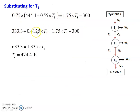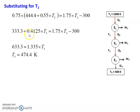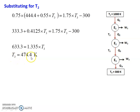Substituting T2 equal to 444.4 plus 0.55 T3 into 0.75 T2 equal to 1.75 T3 minus 300: 0.75 into 444.4 equals 333.3, and 0.75 into 0.55 equals 0.4125 T3. So 333.3 plus 0.4125 T3 equal to 1.75 T3 minus 300. Adding 300 to both sides: 633.3 equal to 1.335 T3. Therefore T3 equal to 474.4 Kelvin.